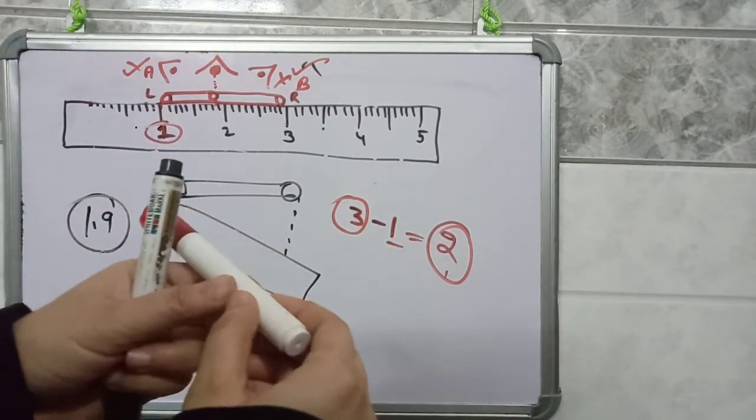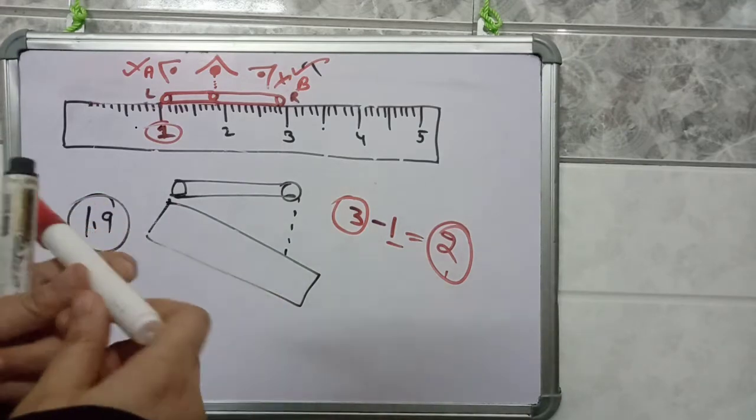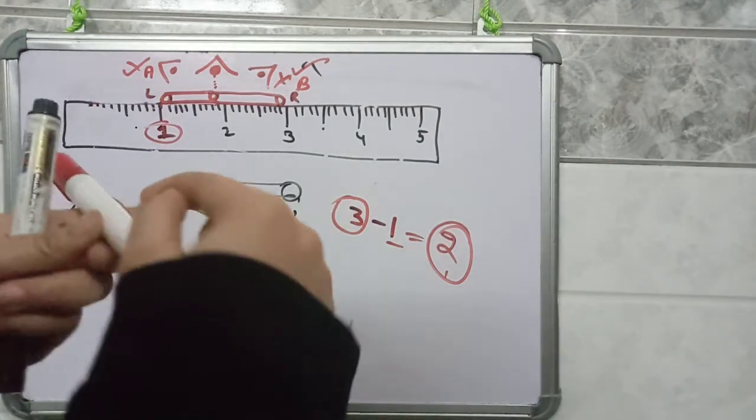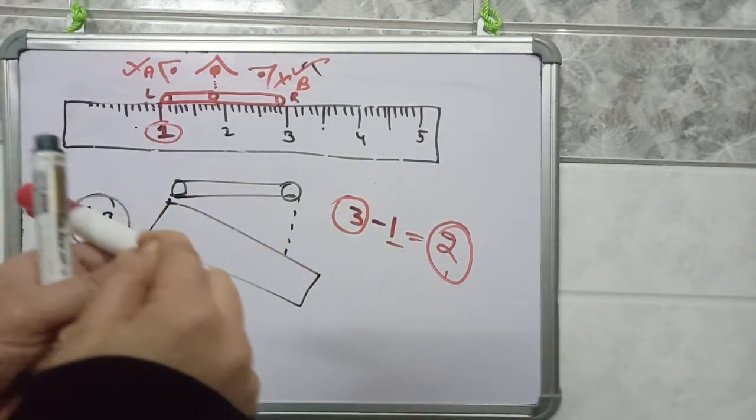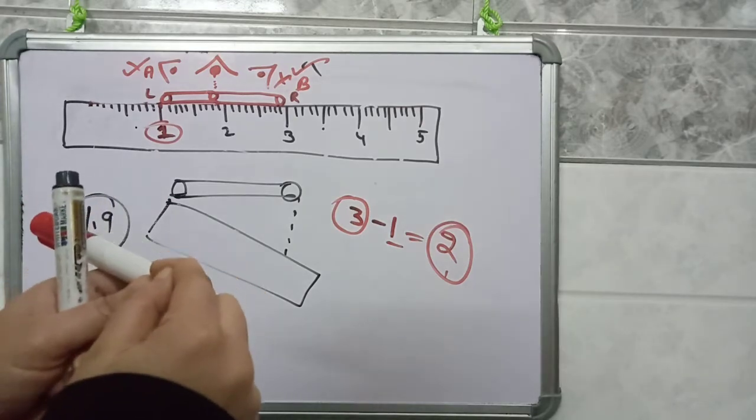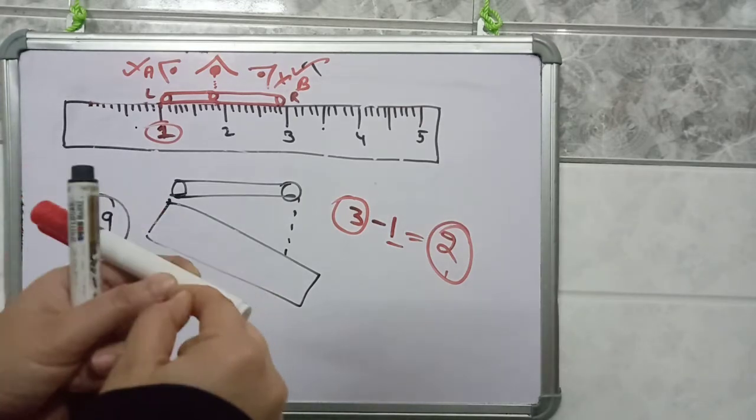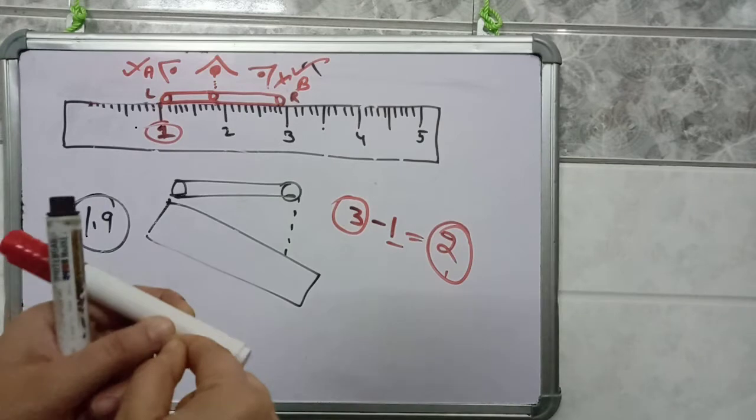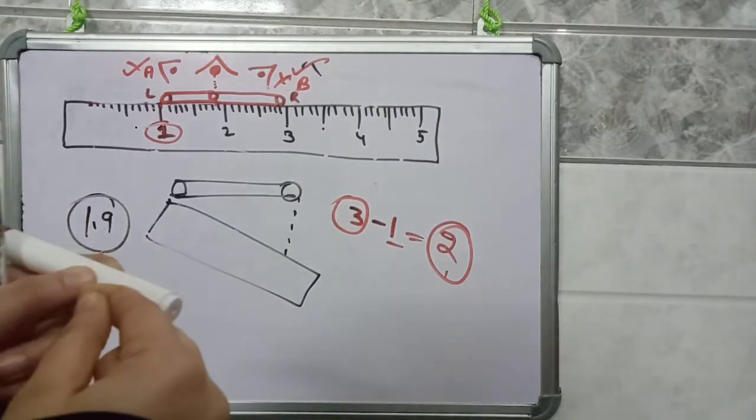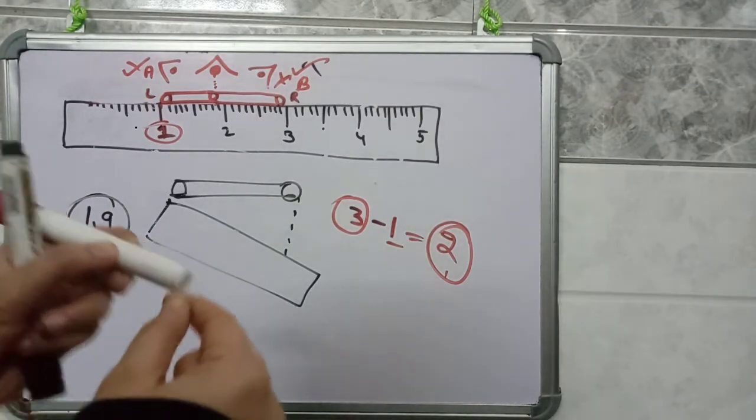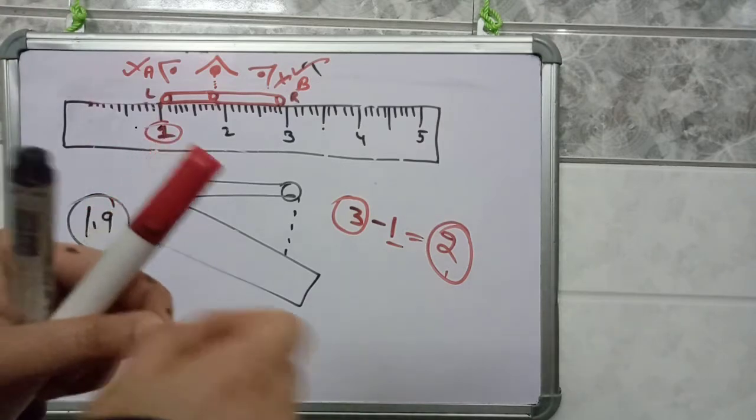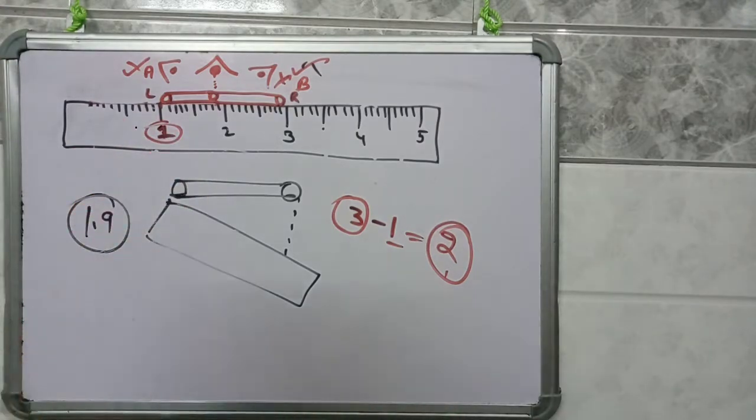Take a thread, tie a knot at its one end and just wrap it around this diameter. Then with the help of a marker or a sketch pen, mark the ending point. Then measure the length of this thread with the help of a scale. This will give you the diameter of this marker.